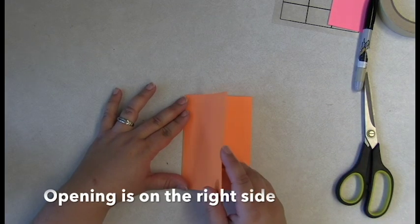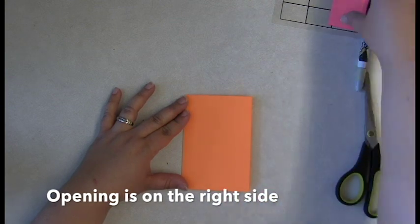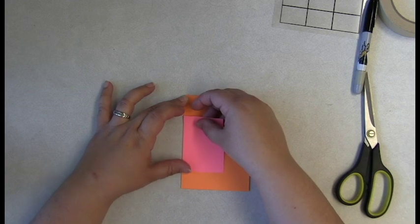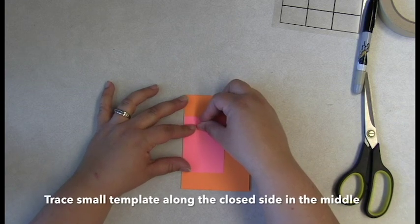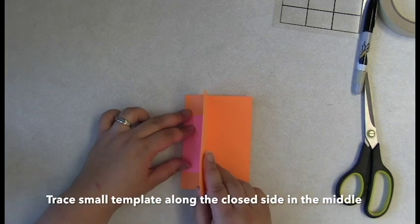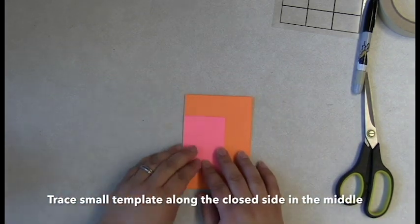Make sure the opening is on the right side. Take your small template, put it towards the middle. Remember, opening is on this side, small template's on the inside.